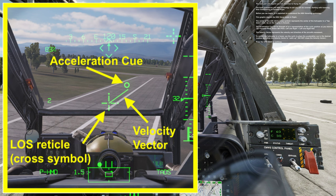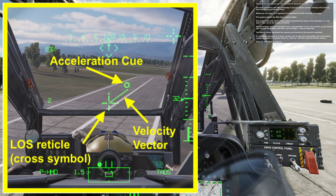The acceleration queue can be thought of as a representation of the cyclic position as you move it: up is forward pitch, down is aft pitch, left and right correspond to left and right roll. The velocity vector represents the velocity and direction of the aircraft's movement. To control the helicopter in a hover, use the cyclic to place the acceleration queue in the desired location and allow the velocity vector to catch up. Press the spacebar to continue.